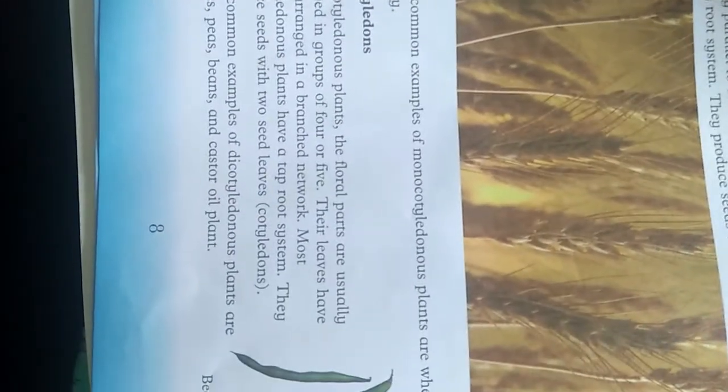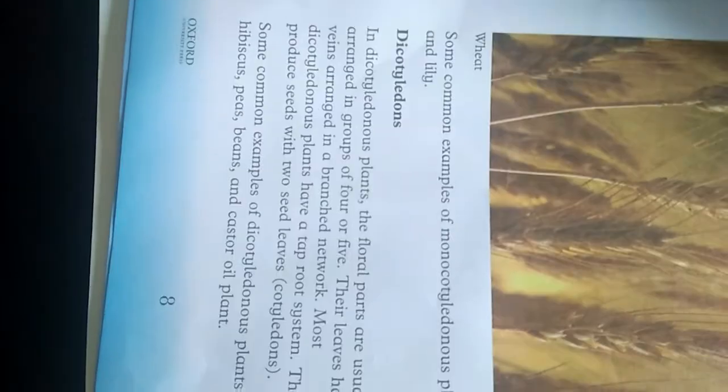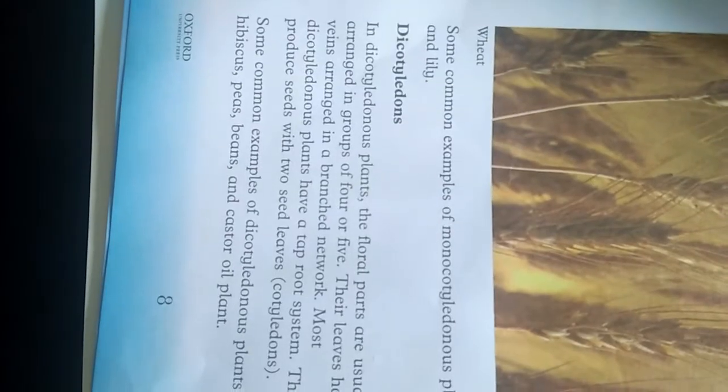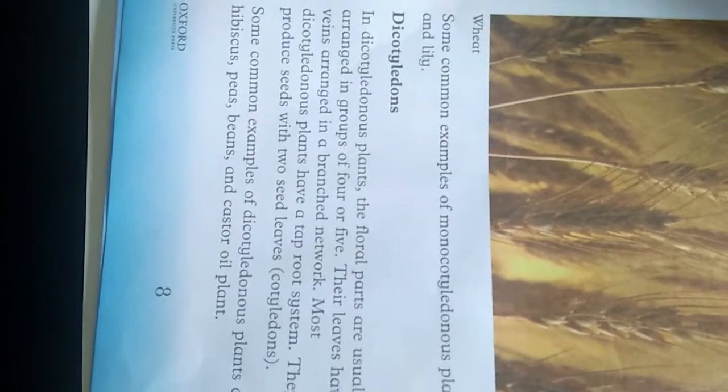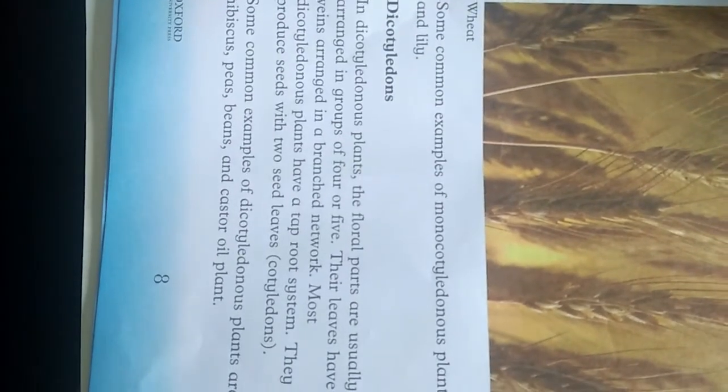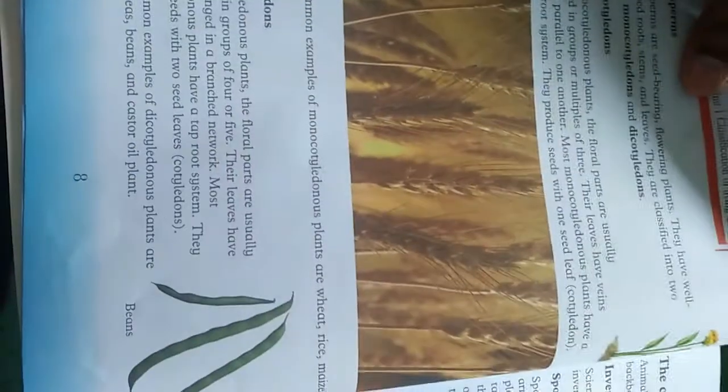Some common examples of dicotyledon plants are hibiscus, peas, beans, and castor oil plant. This is the whole classification about plants that we have explained.